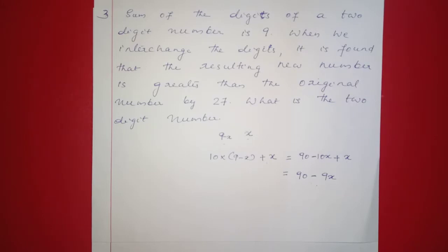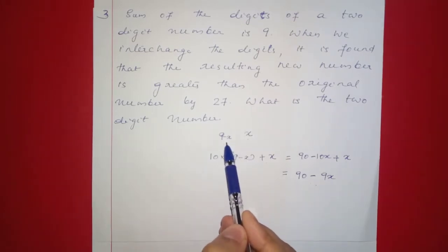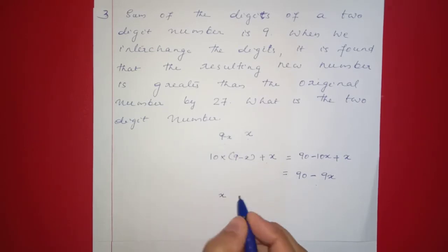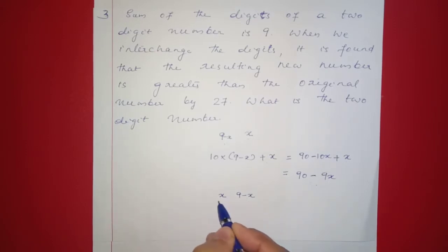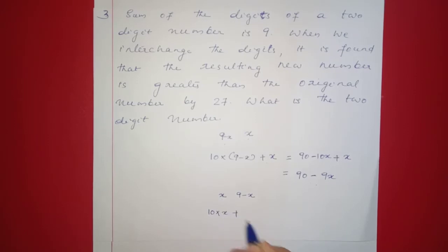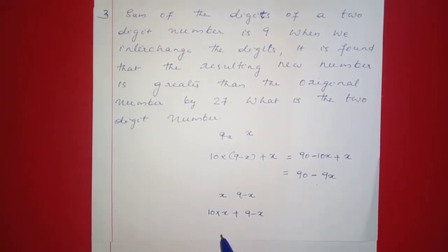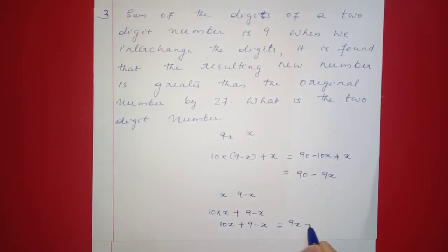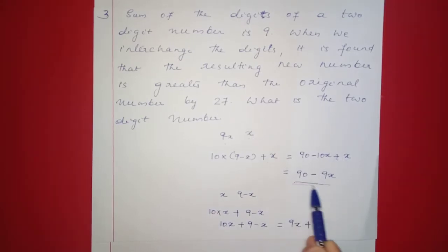When we interchange the digits, the unit place becomes 9 minus x and the tens place becomes x. The new interchanged number is 10 into x plus 1 into (9 minus x), which equals 10x plus 9 minus x, giving us 9x plus 9.